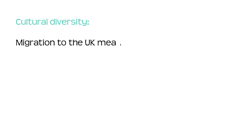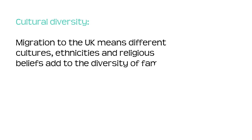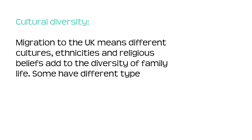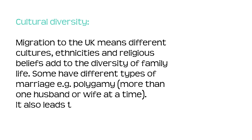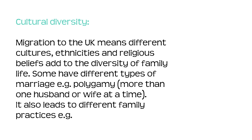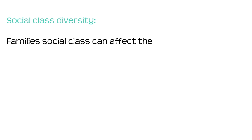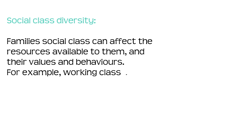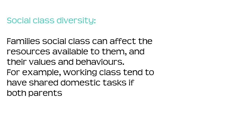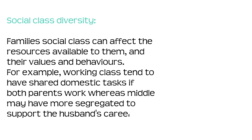Cultural diversity: migration to the UK means different cultures, ethnicities and religious beliefs add to the diversity of family life. Some have different types of marriage, such as polygamy — where more than one husband or wife at a time — and it also leads to different family practices such as child rearing practices. Social class diversity: family social class can affect the resources available to them and their values and behaviours. For example, working class families tend to have shared domestic tasks if both parents work, whereas middle class families may have more segregated roles to support the husband's career.